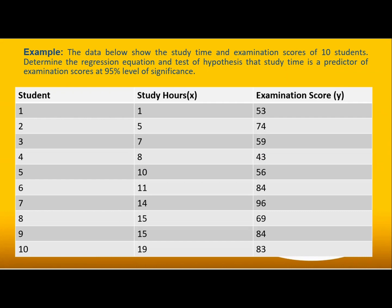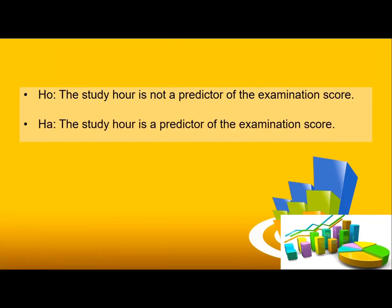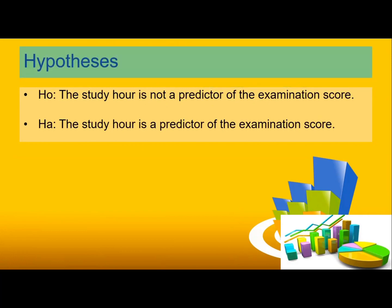Here is an example — note that 10 respondents is not the standard for quantitative research. The data below shows the study time and examination scores of 10 students. We are going to determine the regression equation and test the hypothesis that study time is a predictor of examination score at a 95% level of significance. The independent variable is study hours and the dependent variable is examination score.